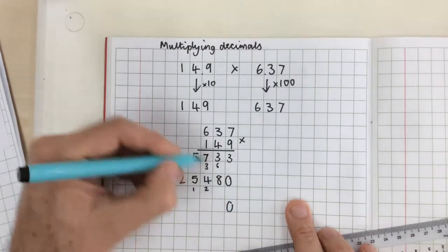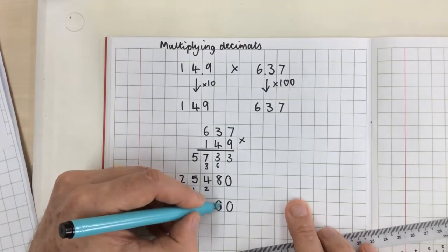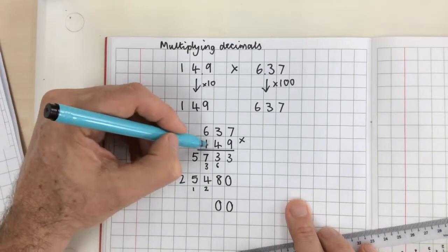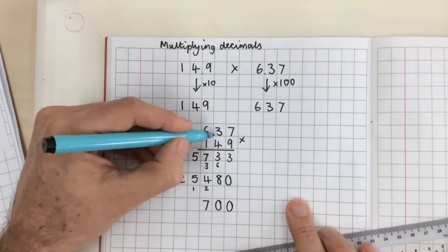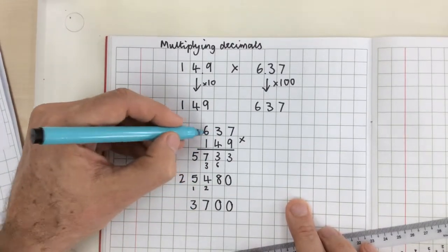Next I'm multiplying by 100 so I'm going to have two 0s as place markers. 1 times 7 is 7, 1 times 3 is 3, 1 times 6 is 6.